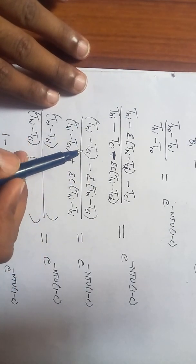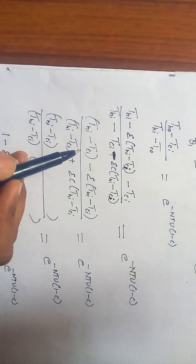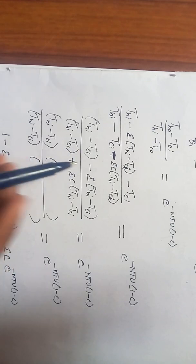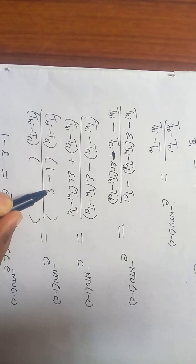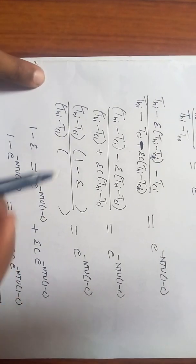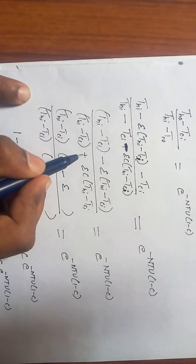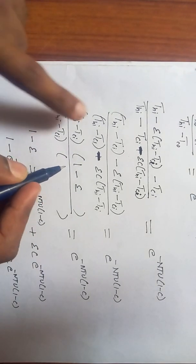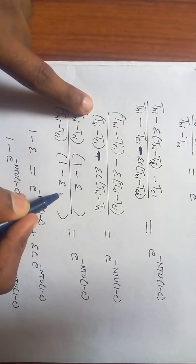Now if you carry it forward, take TH_in minus TC_in as a common factor. If you take TH_in minus TC_in as a common factor, I will get 1 minus epsilon, and here I will get, this minus is carried forward, so this will become 1 minus epsilon times C.